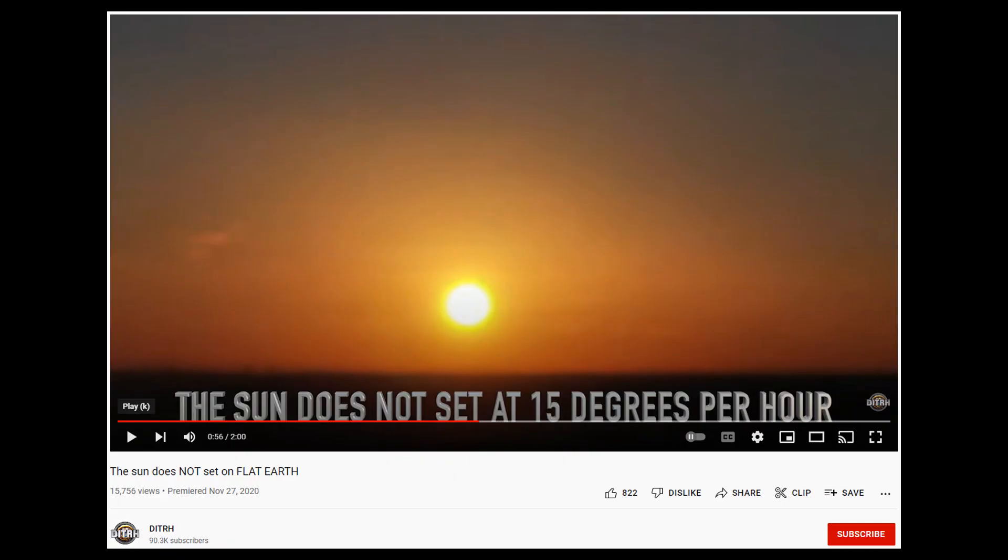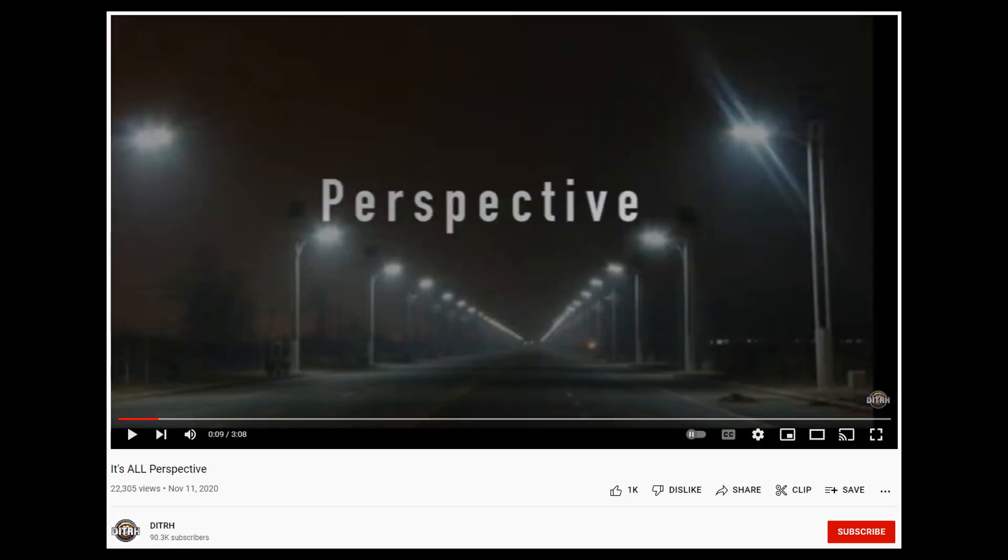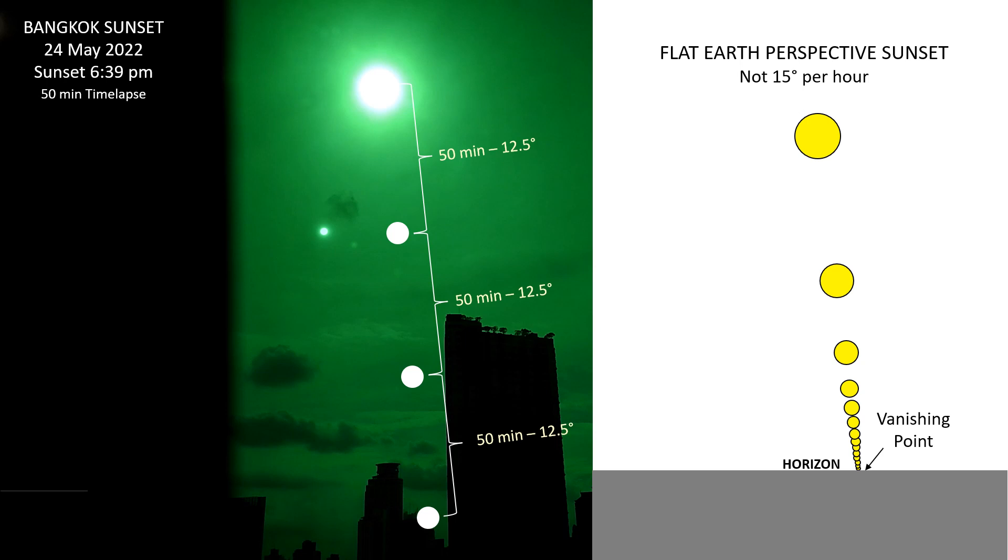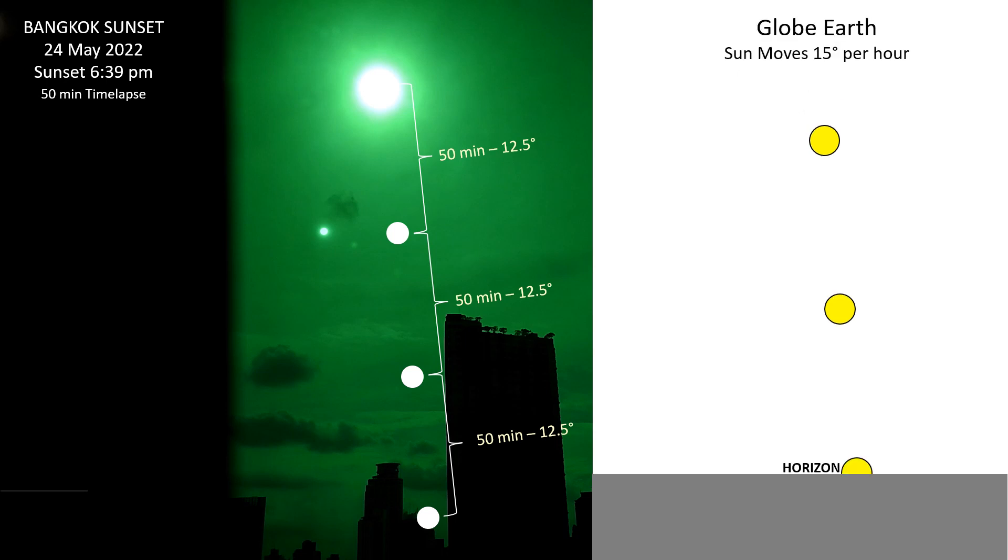But flat-earther Dave Weiss makes the claim that the Sun does not set at 15 degrees per hour. He's pushing the flat-earth narrative that the Sun sets due to perspective just like a row of streetlights that appear to get lower as they head off into the distance. But if Dave is right and the Sun does set due to perspective and not at 15 degrees per hour then why don't we see something like this? I didn't see this happen from my location and I know it doesn't happen from other locations. What I recorded matches what we would expect to see on the globe.